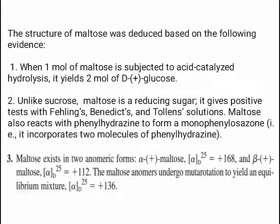The structure of maltose was deduced from the following evidence: when one mole of maltose is subjected to acid-catalyzed hydrolysis, it yields two moles of D-glucose. Unlike sucrose, maltose is a reducing sugar — it gives positive tests with Fehling's, Benedict's, and Tollens' solutions. Maltose also reacts with phenylhydrazine to form a monophenyl osazone, incorporating two molecules of phenylhydrazine. Maltose exists in two anomeric forms: alpha-maltose (+168°) and beta-maltose (+112°), undergoing mutarotation to an equilibrium mixture of +136°.